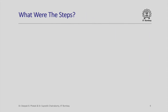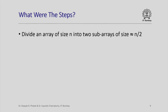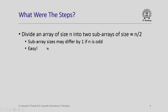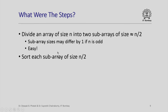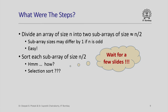The steps we use: take an array of size n and divide it into two subarrays of size roughly n/2. If n is odd, the two subarrays may differ in size by 1. This is easy to do — we find the middle index in the range of indices of our array and look at one part from the beginning up to the middle index, and the other part from the middle index up to the end. Once divided, we want to sort each subarray of size n/2. Let us just wait a few slides — we will see a very elegant way of doing this.